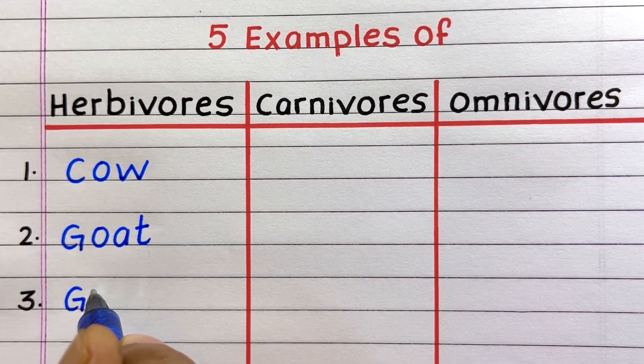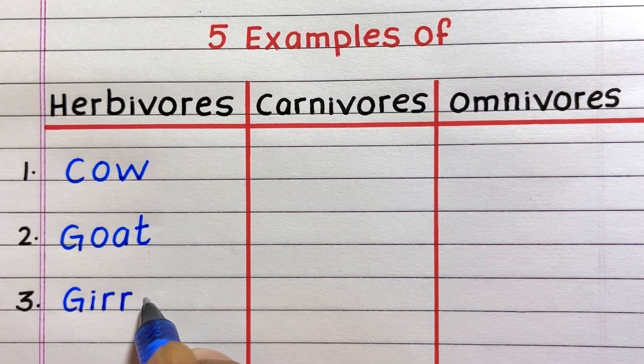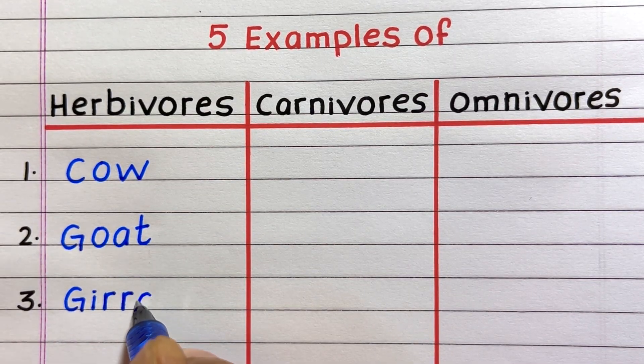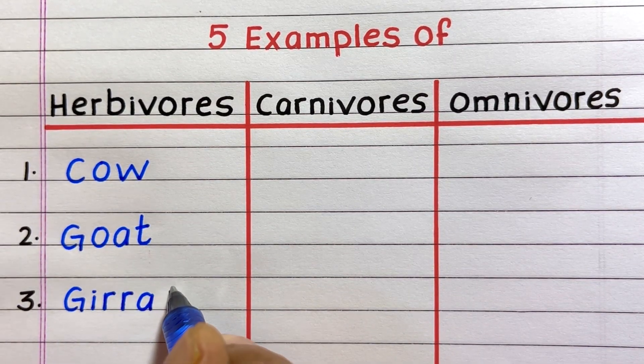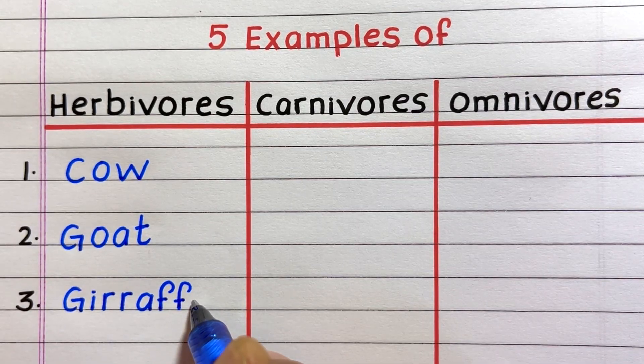The first example of a herbivore is cow, second goat, third giraffe.